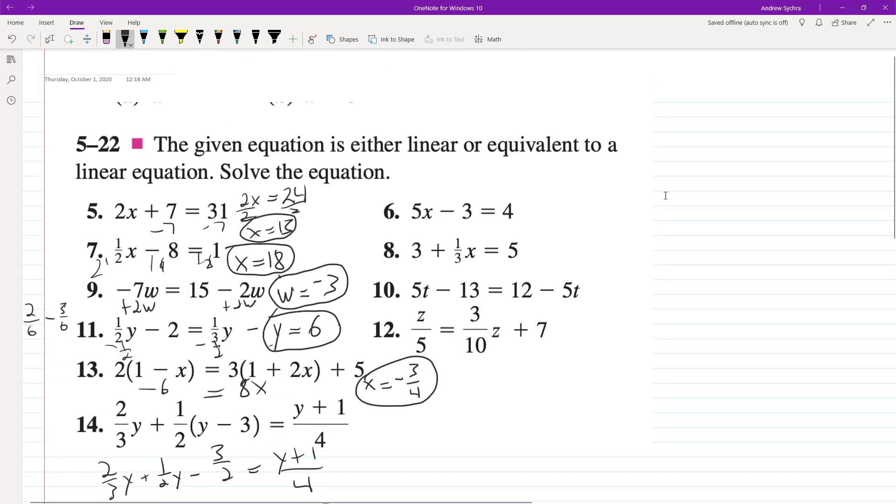So what about, starting with these, all we're going to do is add 3 to both sides. 5x equals 7. Divide by 5. x equals 7 over 5.